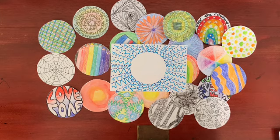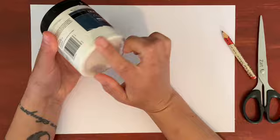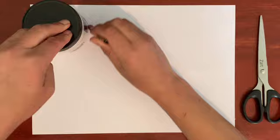First you'll need to trace around something that's a circle to create a series of dots on your page. You should fit at least six on an A4 page.